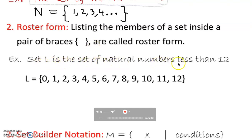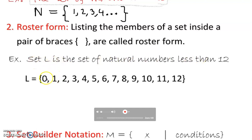The set L is the set of natural numbers less than 12. This time the description is given — I can convert it to roster form, or if the roster form is given I can convert it to description. It's vice versa. So this one is a description. So how do you do that? L is the set of natural numbers less than 12.